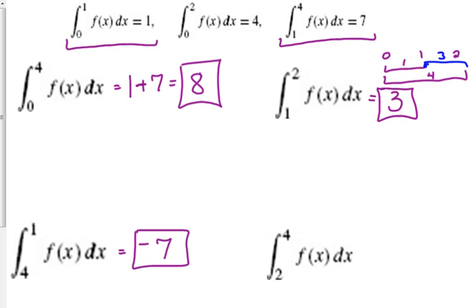From 2 to 4. Well, this is similar to the one right above it. We know, let's see here, we know from 0 to 2 is 4. And we found out that from 0 to 4, that was 8. We figured that out in the first part. So from 2 to 4, it's 4.